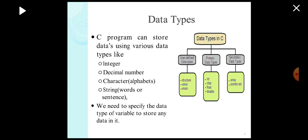The different types of data in C are categorized into three main categories: user-defined data types, primary data types, and secondary data types.